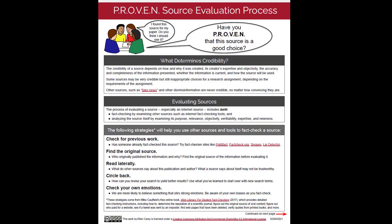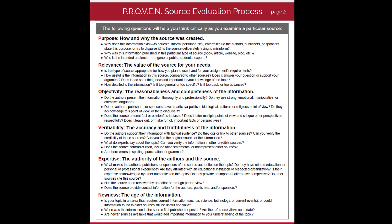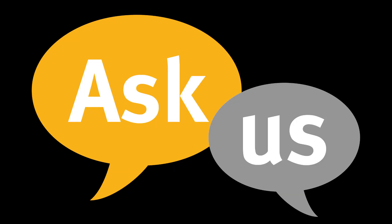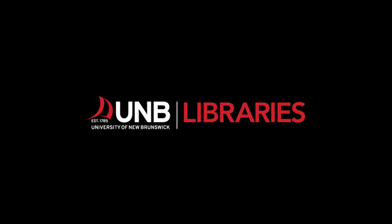Review the PROVEN handout for the original evaluation criteria that this video closely emulates. You can find the link to the handout in the video description and the transcript. In this video, you have learned how to evaluate websites based on the PROVEN criteria, where PROVEN stands for purpose, relevance, objectivity, verifiability, expertise, and newness.